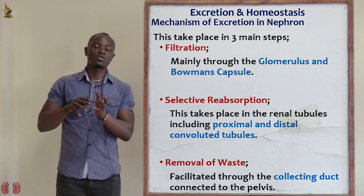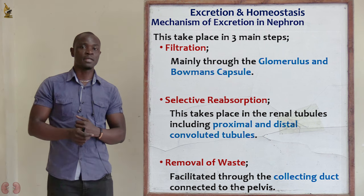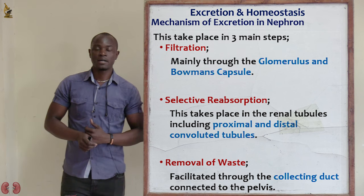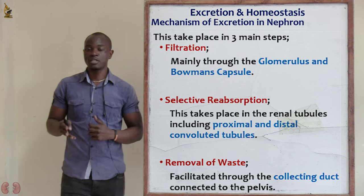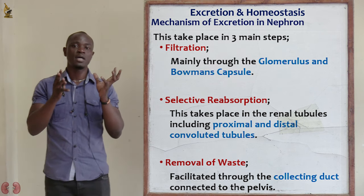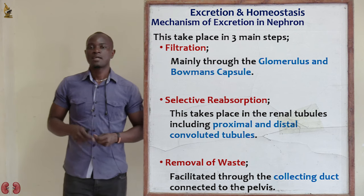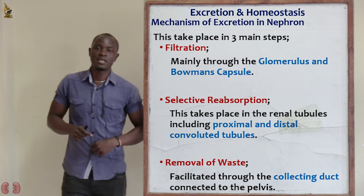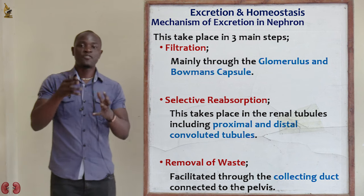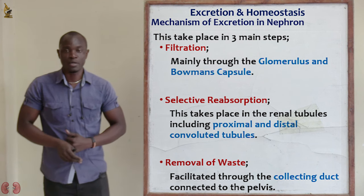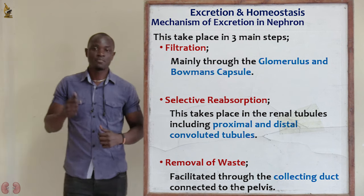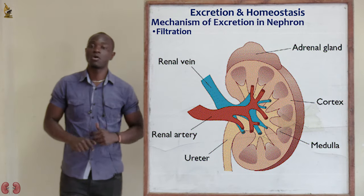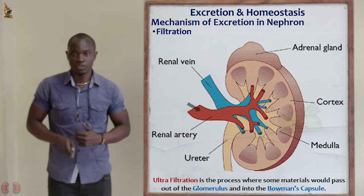Through the collecting duct, the removal of waste products takes place. Filtration is going to take place in the Bowman's capsule and the glomerulus. Selective reabsorption is going to take place in the different tubules. So let's begin with the first one, which is filtration or ultrafiltration.